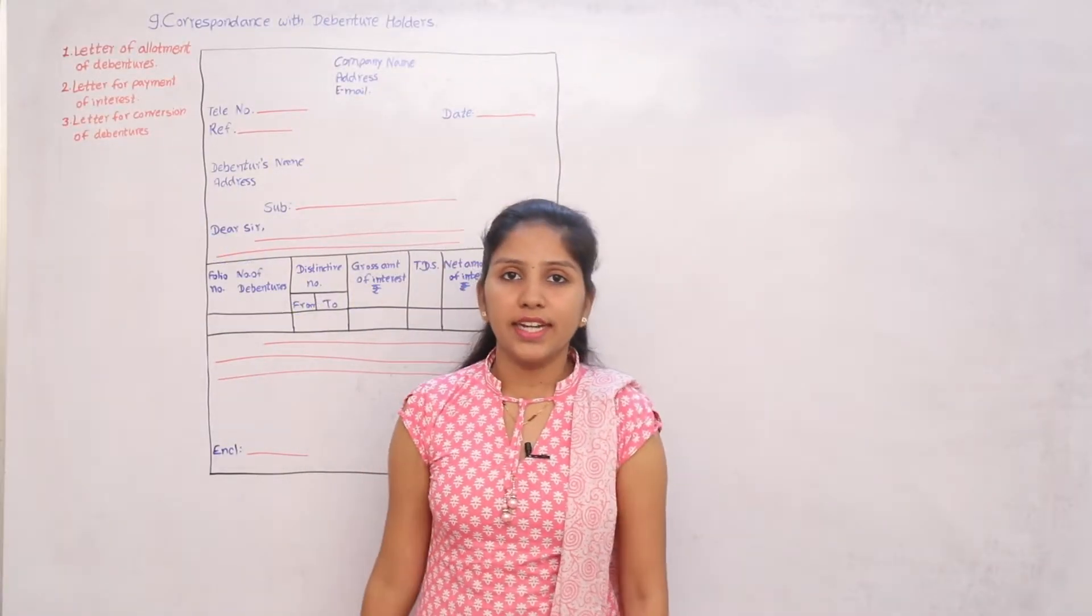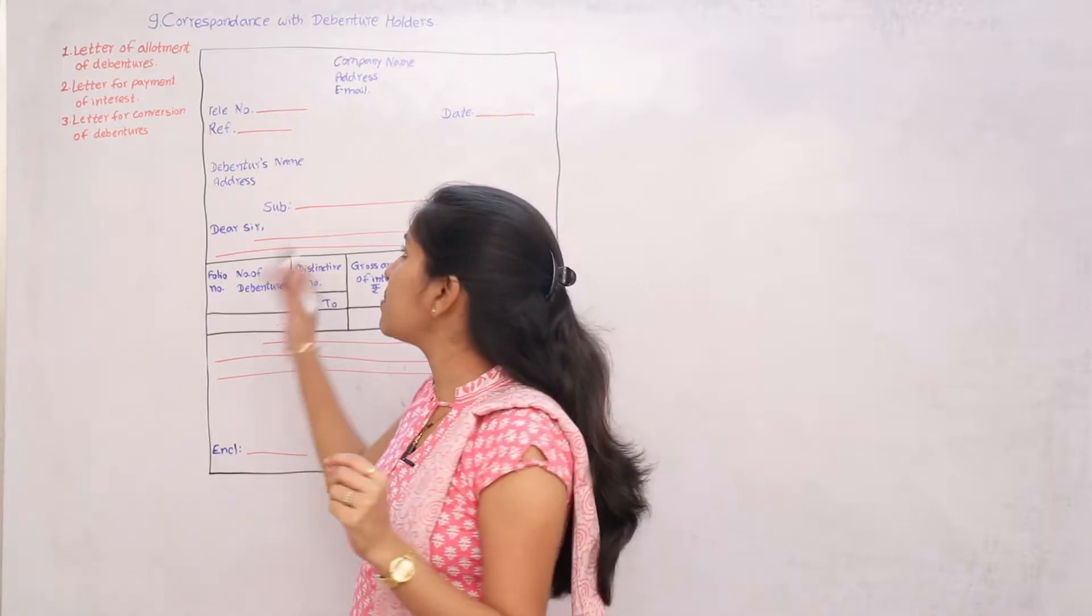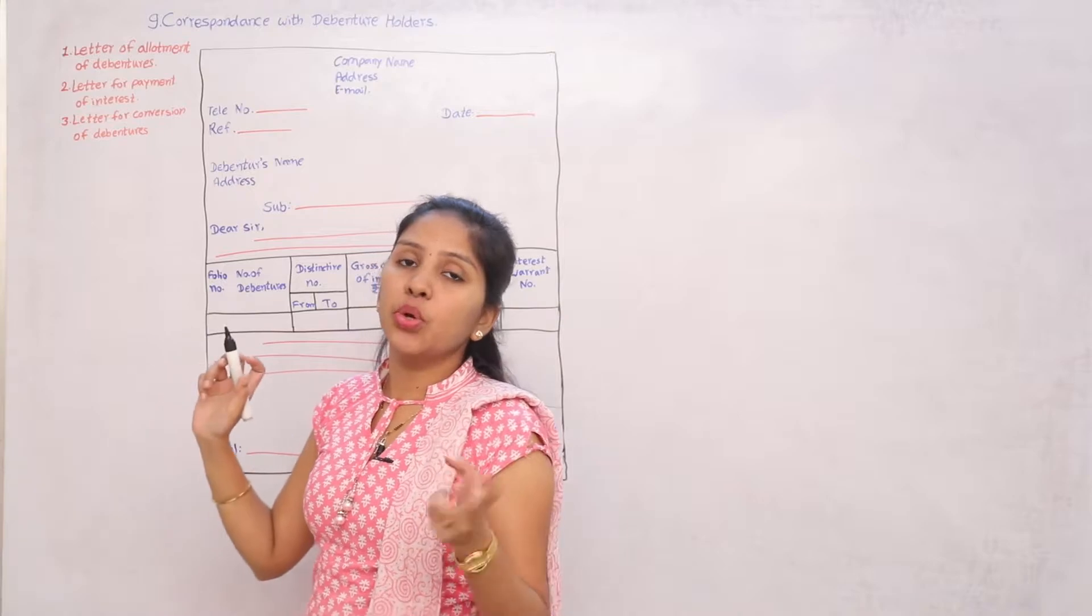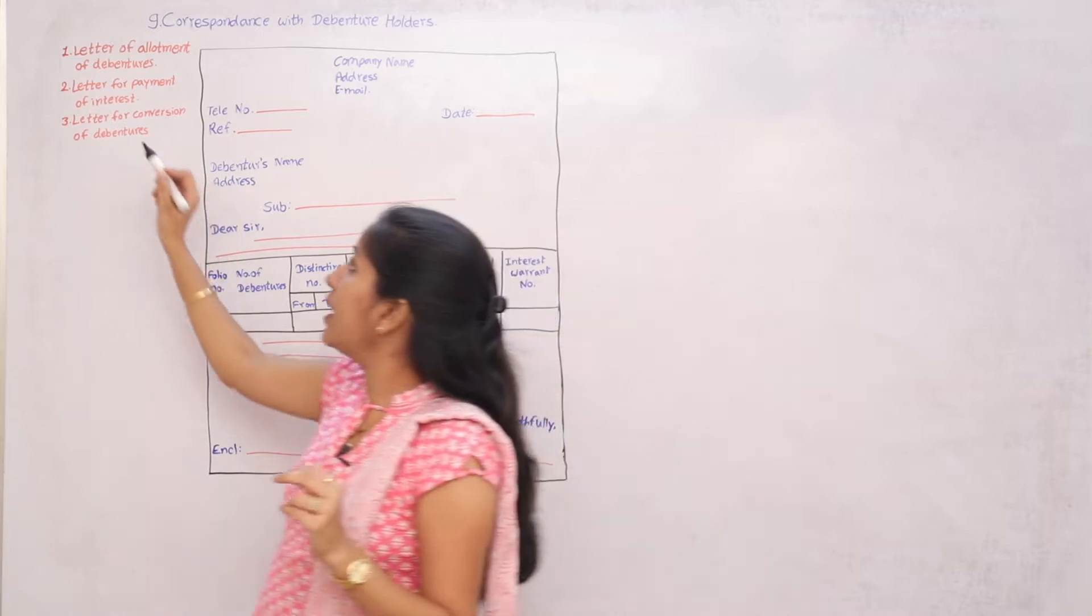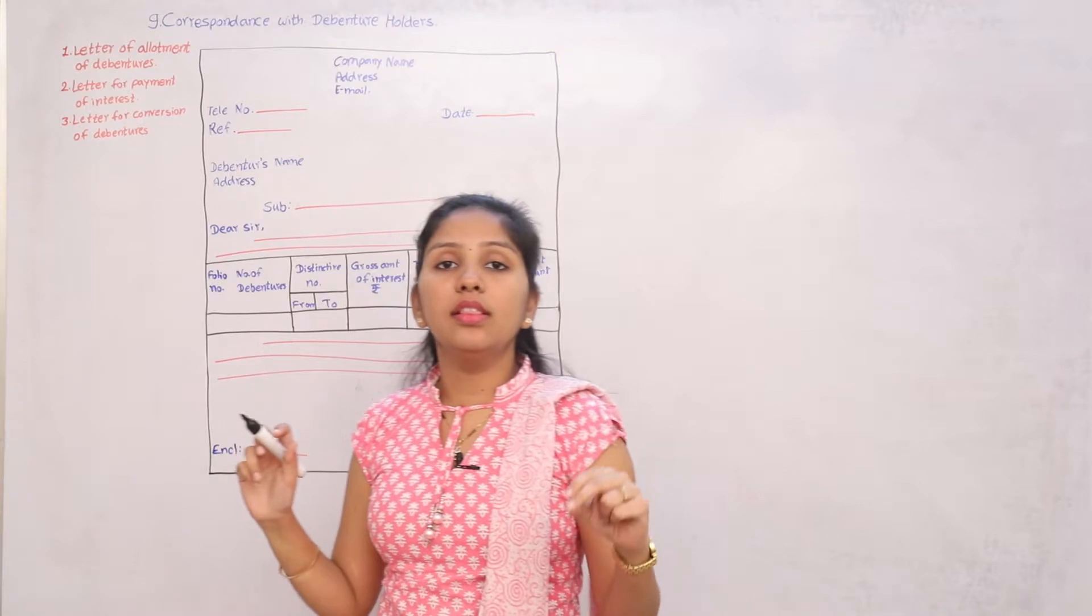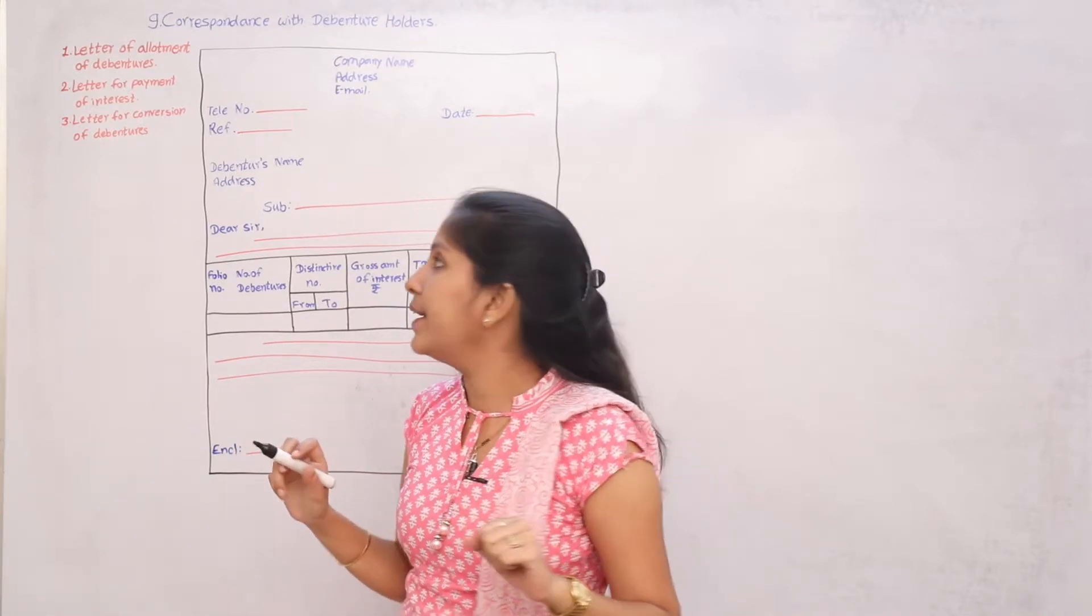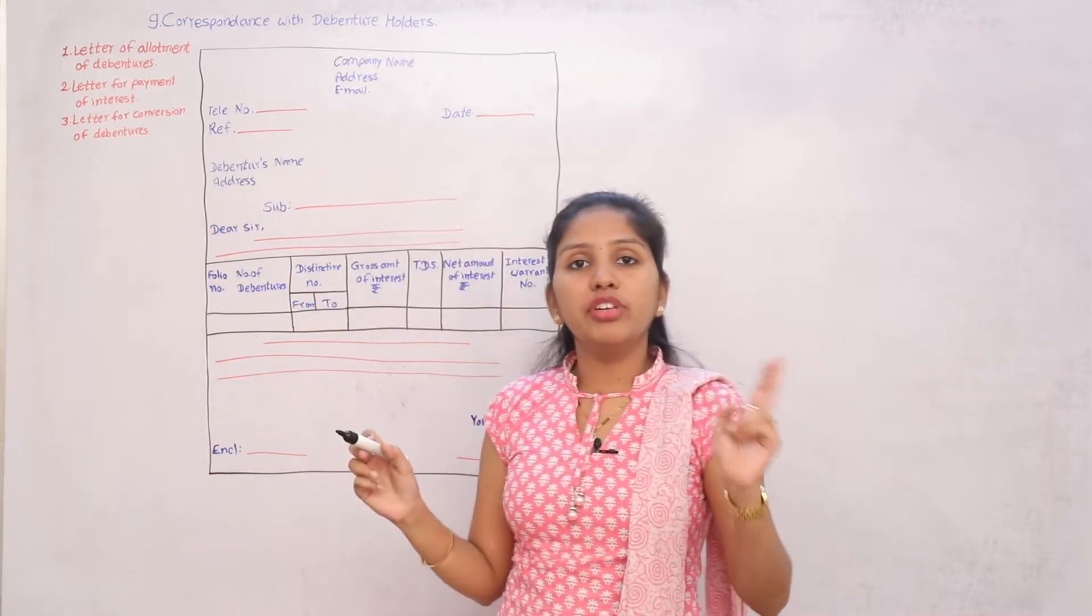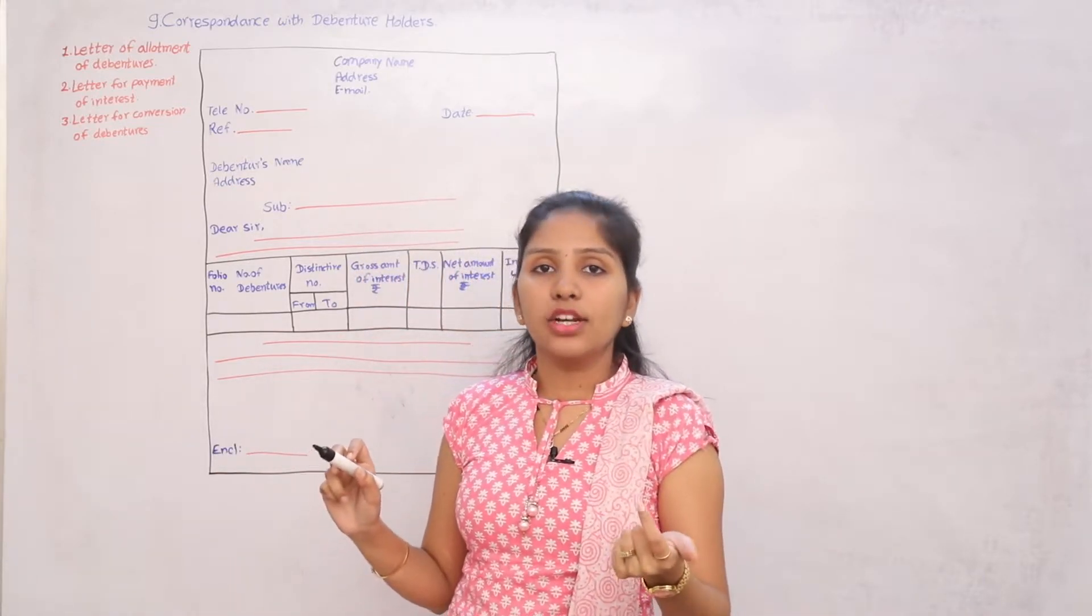So now we will go for the letters which you can cover. There's a letter of allotment of debentures, letter for payment of interest to debenture holders, and letter for conversion of debentures into equity shares. Now these three letters you can write.